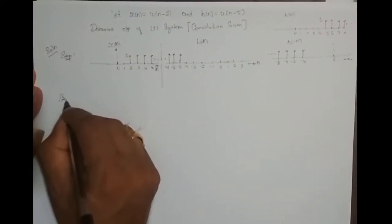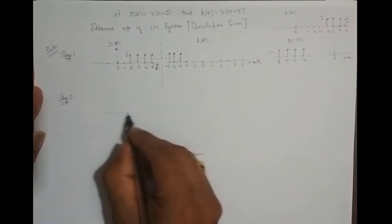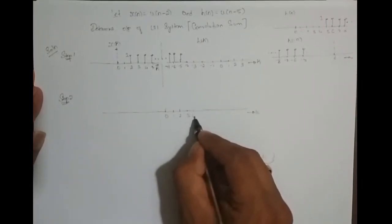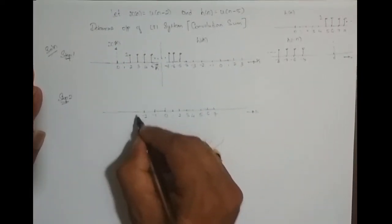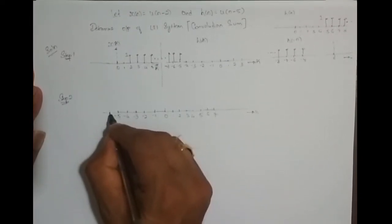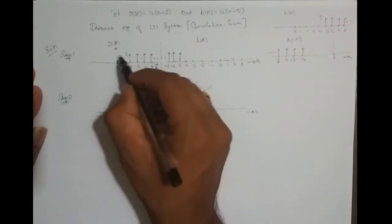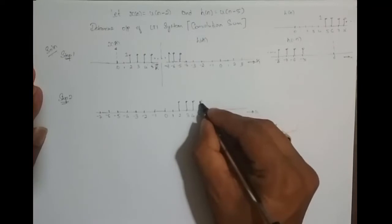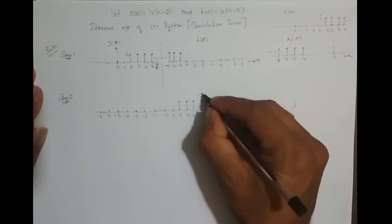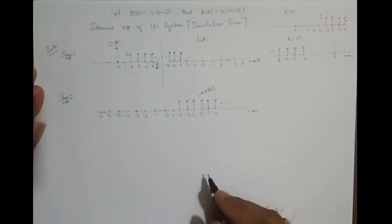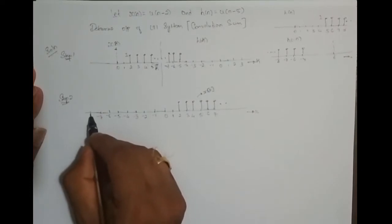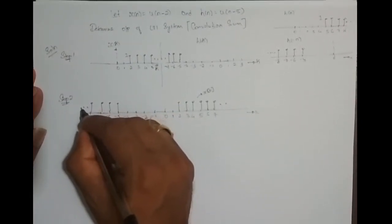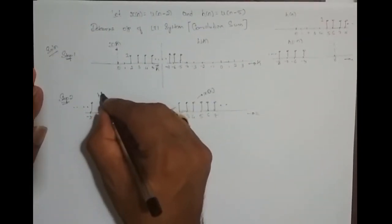Step 2 is to bring both sequences into the same independent variable k. x(k) starts from 2 and goes to 3, 4, 5, 6, 7 until infinity, with amplitude 1. h(-k) starts from -5, -6, -7, -8 and goes till minus infinity, with amplitude 1.